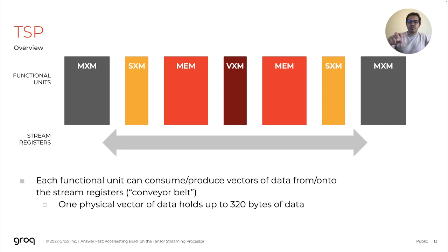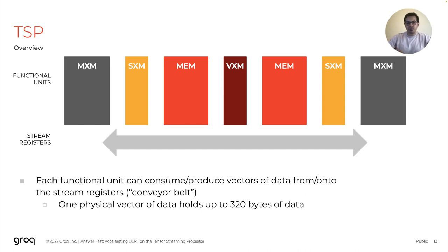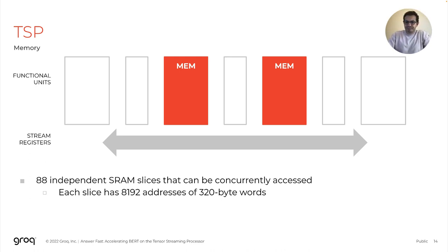A functional unit would read from or write to the stream registers next to it, and that data on the stream registers would always be flowing. You can think about the stream registers as a conveyor belt where data is always moving — a functional unit can pick something up, operate on it, and then put it back down on the conveyor belt. These functional units operate on vectors of data, more specifically a vector of 320 bytes. That's our basic operating unit. Now let's look at the first functional unit, which is memory. The TSP has 88 independent SRAM slices that can be accessed concurrently, giving us a huge amount of on-chip bandwidth.